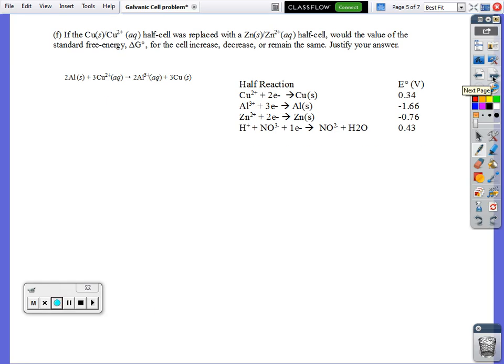For part F, it asks what happens if we replace the copper with zinc. How is that going to change our cell potential? Let's come back up here. Here was our equation with copper. They're saying, let's change this to zinc. We see that zinc has negative 0.76.